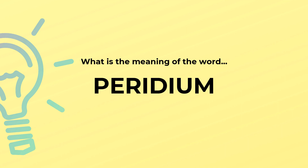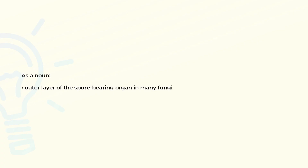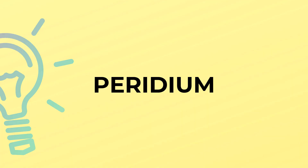What is the meaning of the word «peridium»? As a noun, the outer layer of the spore-bearing organ in many fungi. «Peridium» is spelled p-e-r-i-d-i-u-m. «Peridium».